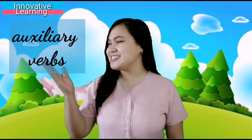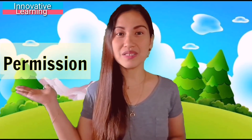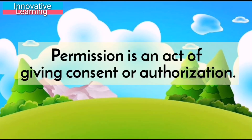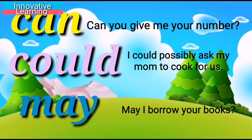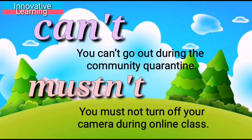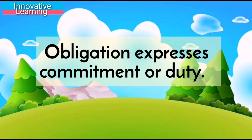Modals are called auxiliary or helping verbs. They may be used in expressing permission, obligation, and prohibition. Permission is an act of giving consent or authorization. Examples: 'Can you give me your number?' and 'May I borrow your books?' Prohibition is an act of disallowing or prohibiting someone from doing something. Examples: 'You can't go out during the community quarantine' and 'You must not turn off your camera during online class.'